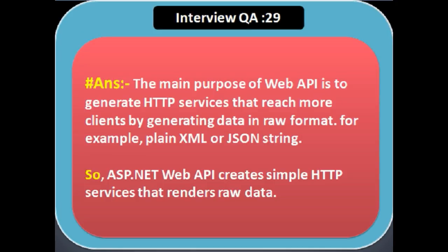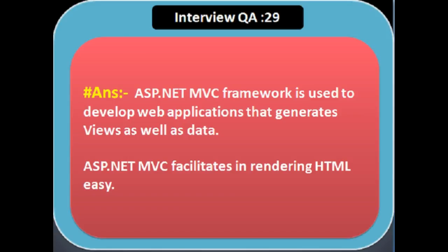Next question: explain MVC versus Web API. The main purpose of Web API is to generate HTTP services that reach more clients by generating data in raw format — for example, plain XML or JSON. ASP.NET Web API creates simple HTTP services that render raw data, but ASP.NET MVC is a framework used to develop web applications that generate views as well as data. ASP.NET MVC facilitates rendering HTML very easily.